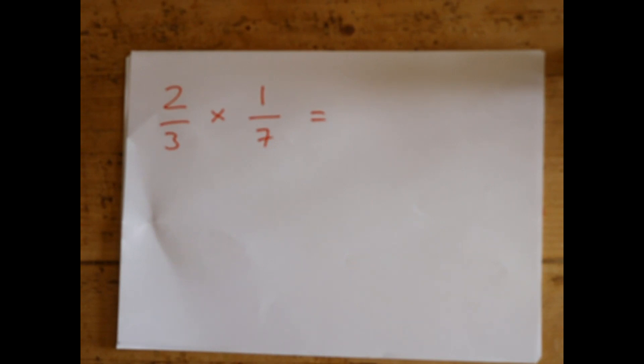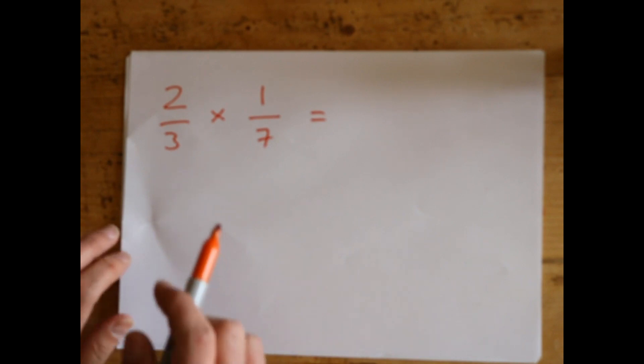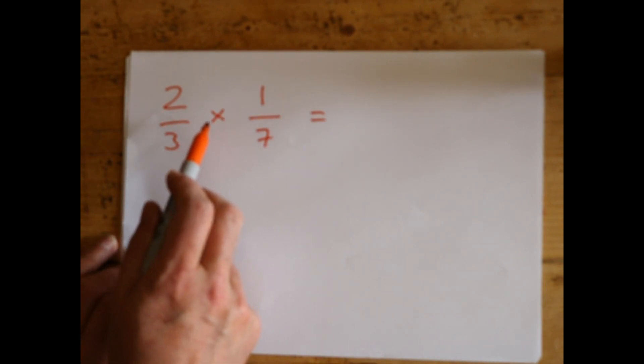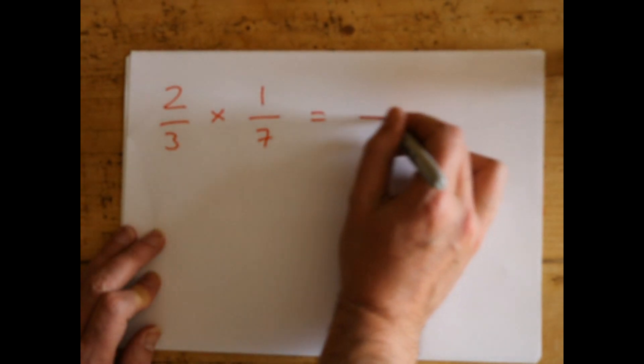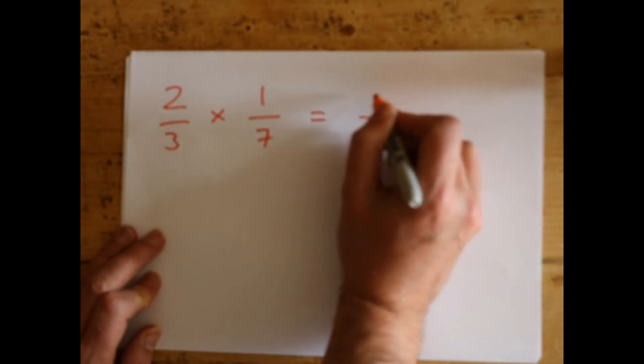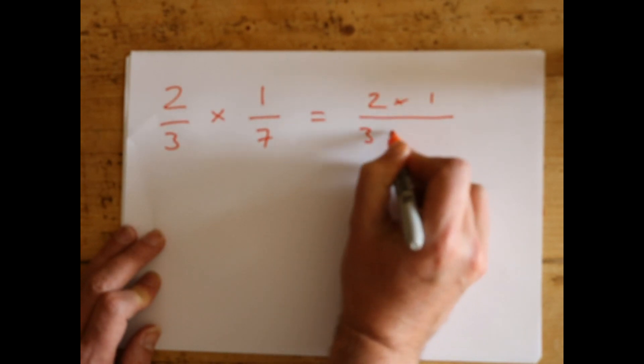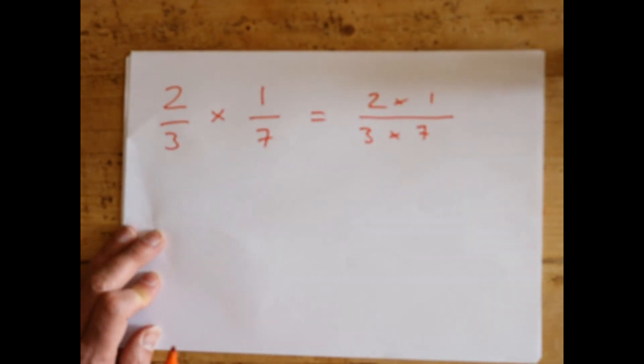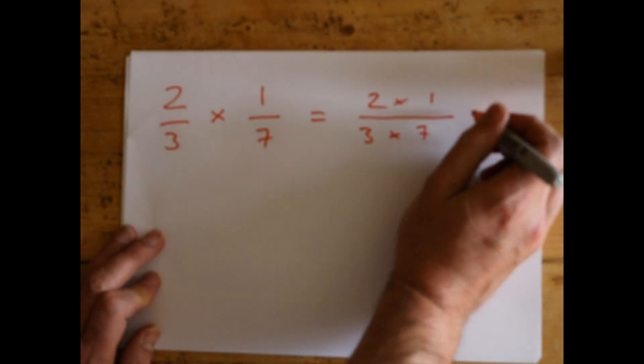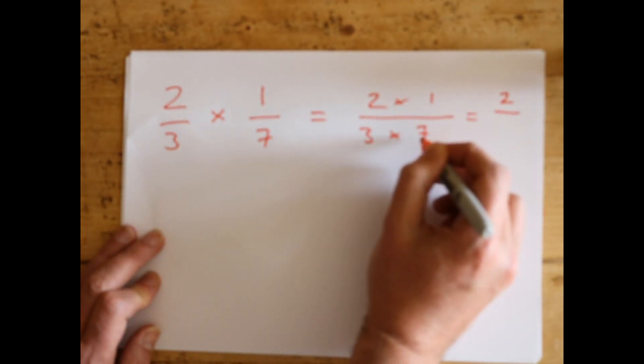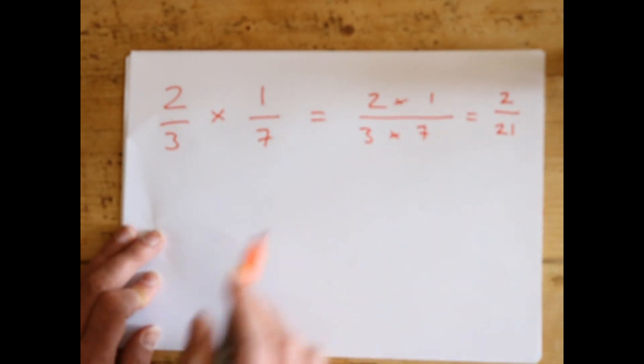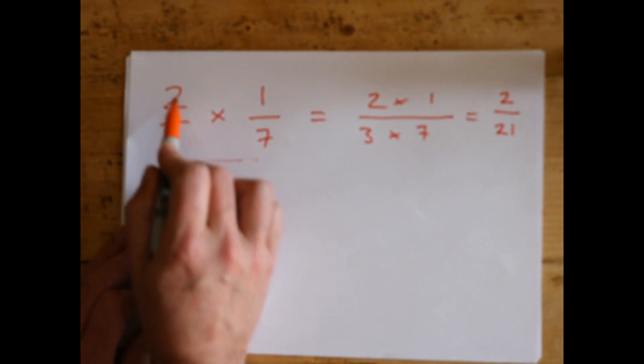Very easy method for multiply. We've got 2/3 multiply by 1/7. You just do a big long line here and put the numbers on the top, and then do it as two separate sums at the top and at the bottom. So 2 times 1 is 2, 3 times 7 is 21. Dead easy multiplying fractions - you just multiply the tops together and then the bottoms together.